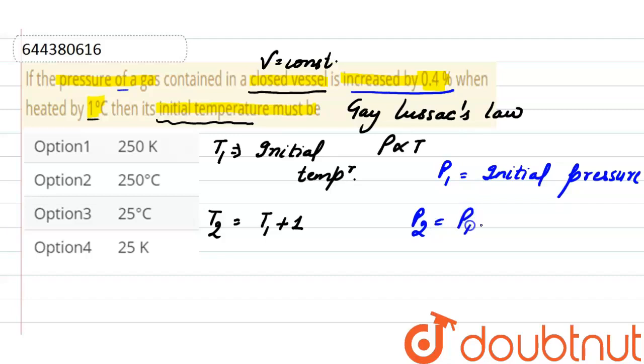is increased by 0.4 percent of P, 0.4 percent. To remove this percent, divide it by 100. From here, final pressure is 1.004 P1. Putting the values here, that is P1 divided by P2 is equal to T1 divided by T2.